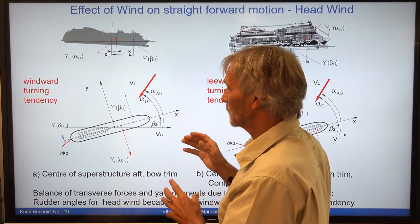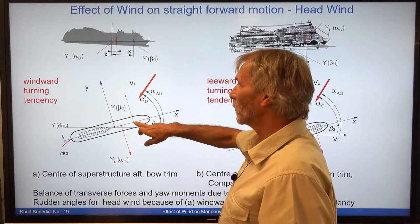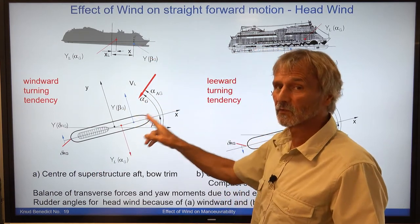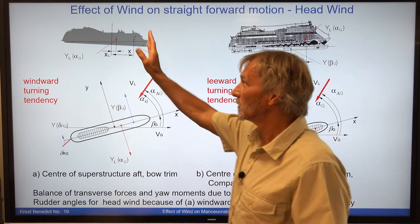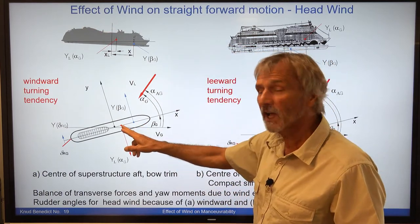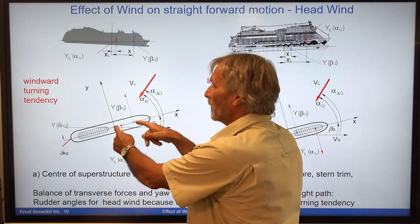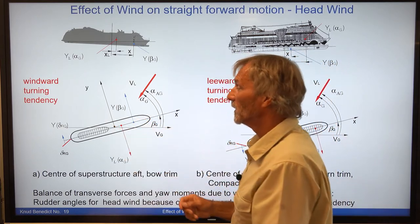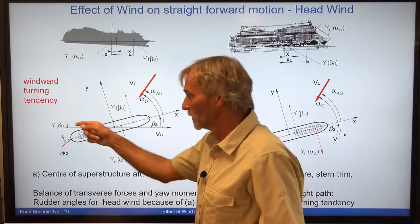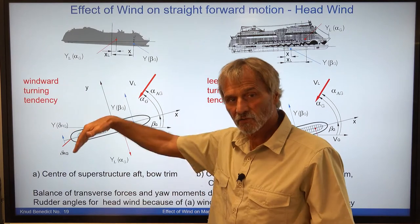The opposite situation: if the ship is trimmed to the bow, the underwater force acts more toward the bow, while the wind force — due to the superstructure in the aft part — is behind the hydrodynamic force. Comparing the levers of these two forces, there is clearly a tendency to turn into the wind — a windward turning tendency. To keep this ship on a straight track, you would need a rudder angle to the lee side.